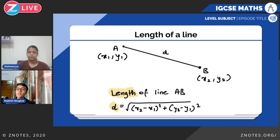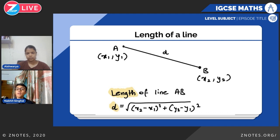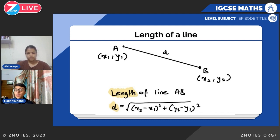Next is the length of a line, which you can understand intuitively by forming a triangle with hypotenuse AB. The difference of x-coordinates gives the base and the difference of y-coordinates gives the perpendicular. You square them, sum the squares, and square root to get the hypotenuse. The formula is: length of AB equals the square root of (x2 minus x1)² plus (y2 minus y1)².